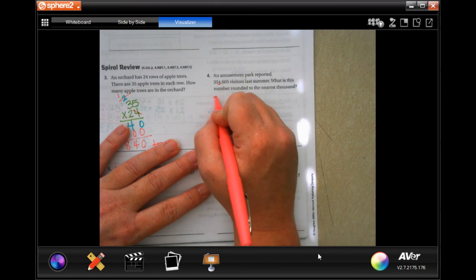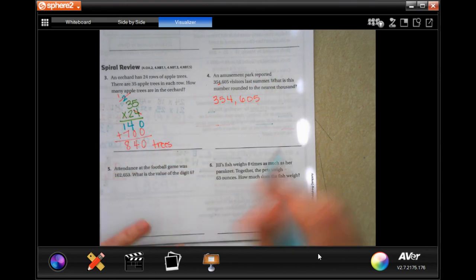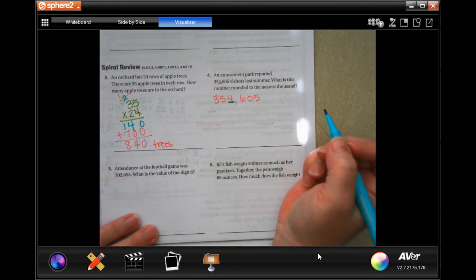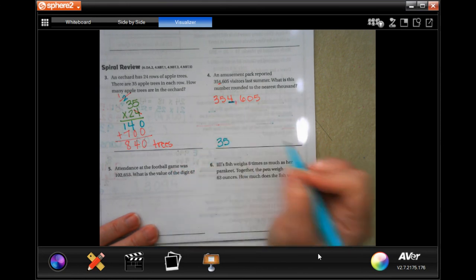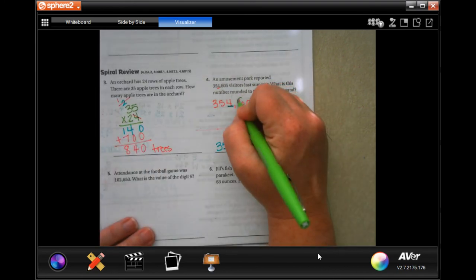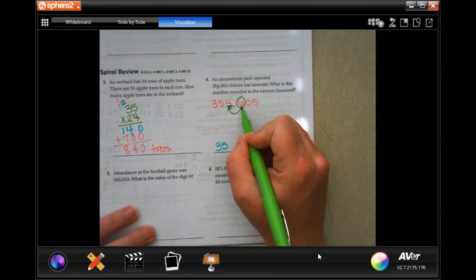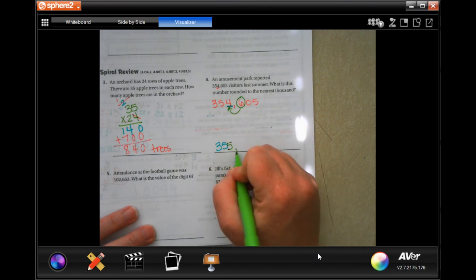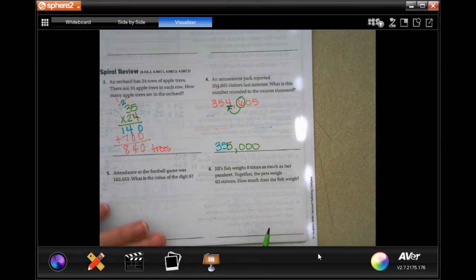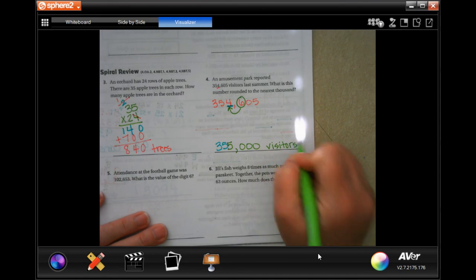So, I'm going to write down our number. I'm going to underline the thousand. Now, everything before that underlined number stays the same. Now, we are going to look at the number after it to decide if it needs to go up or stay the same. If this number is smaller than 5, then we can keep that a 4. If it's bigger than 5, it needs to go up to a 5. That means that a 6 is bigger than 5, so that number needs to become a 5, and then everything after it becomes a 0. And you can put visitors.